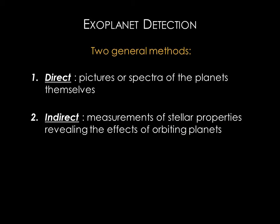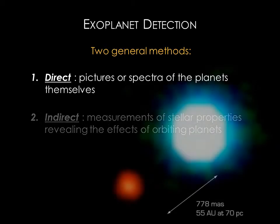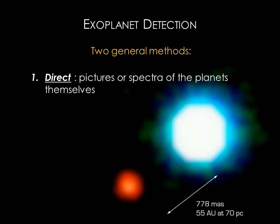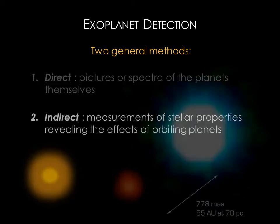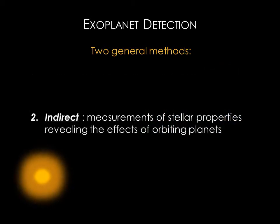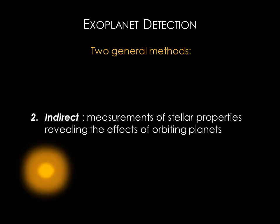Nevertheless, human ingenuity has prevailed, and we've come up with clever ways to look for exoplanets despite the challenges. There are two general methods: direct and indirect detection. Direct detection means obtaining actual images or spectra of the planets, and indirect detection means inferring the existence of planets without actually seeing them. We'll talk about indirect detection first.